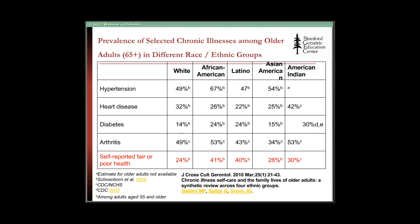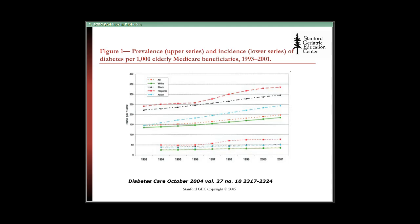Diabetes occurs more often in African American, Latino, and American Indian elders. Asian American elders have about the same prevalence as white American elders. I highlighted the self-reported fair or poor health row so that you could see that the self-reported fair or poor health prevalence is very much the same as the prevalence of diabetes. This slide also shows that diabetes is more prevalent and new cases are more common among elders who are Black, which is the black row, and Hispanic, which is the red row, compared to the green row, which represents white elder Americans.